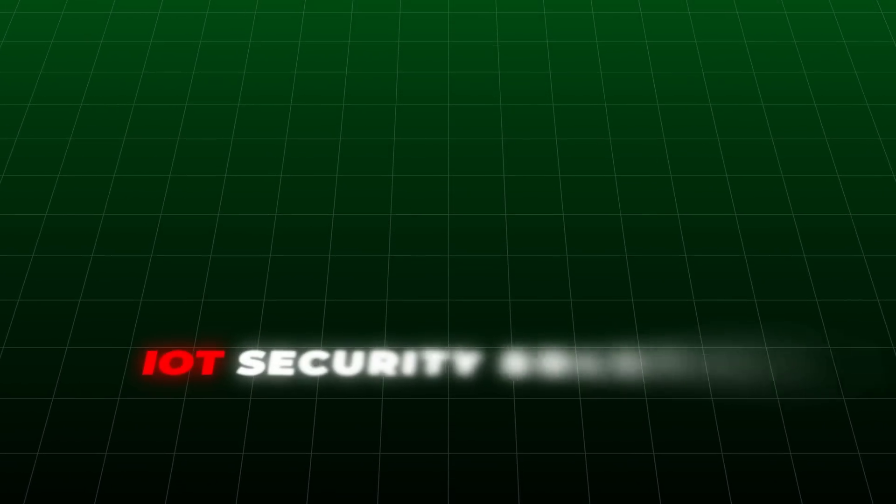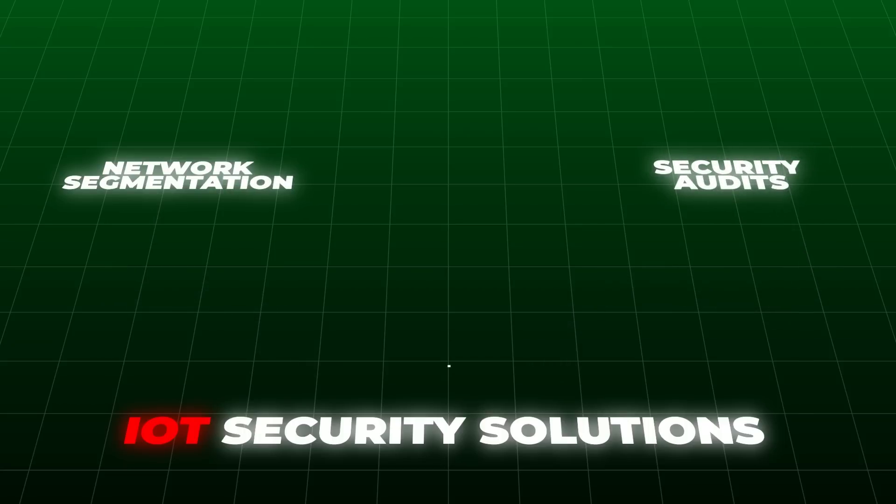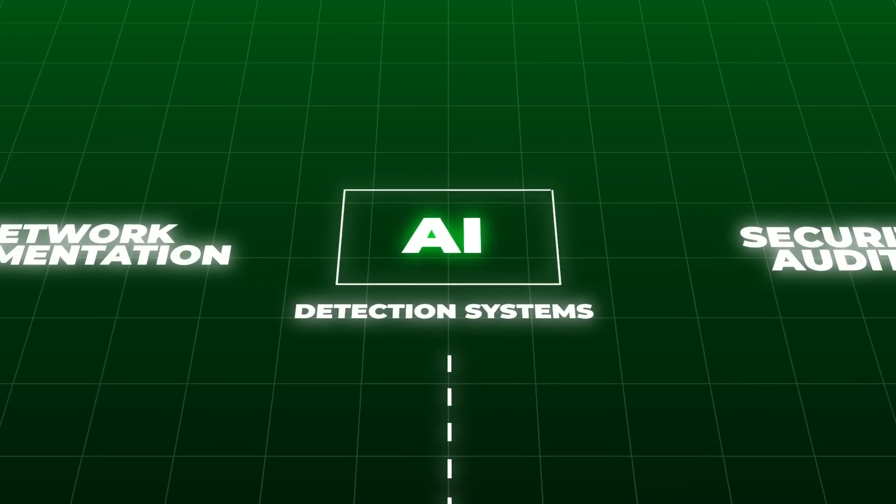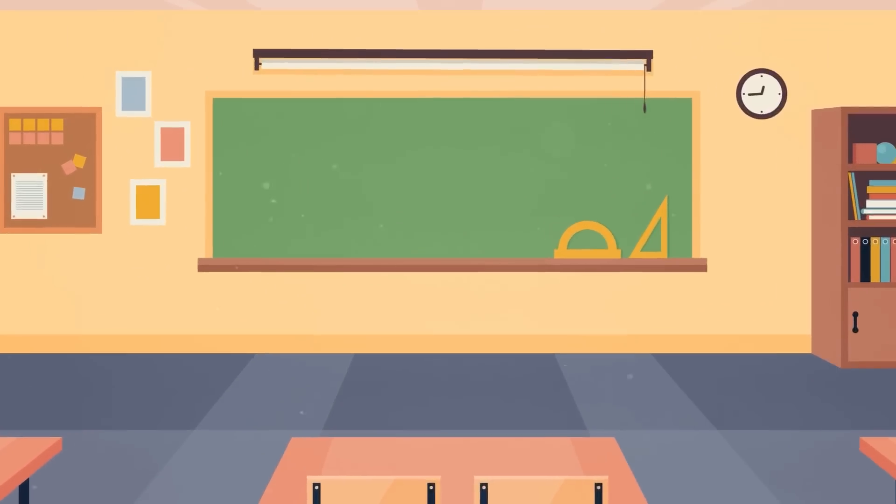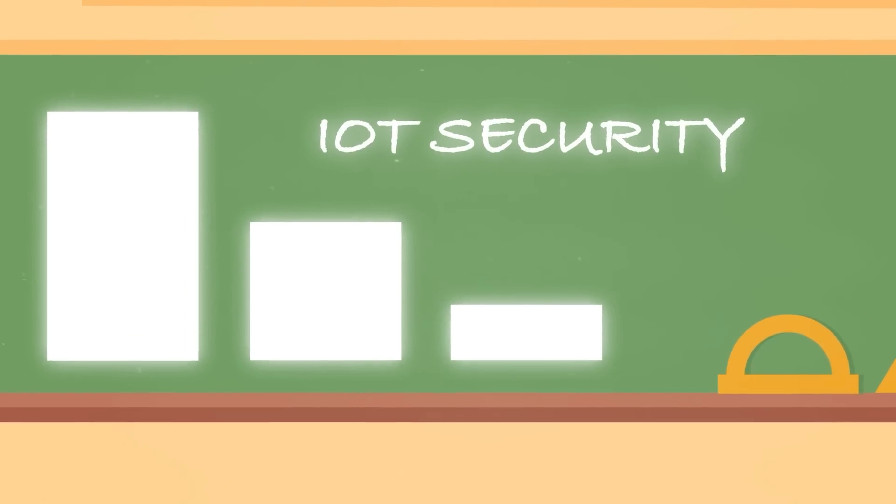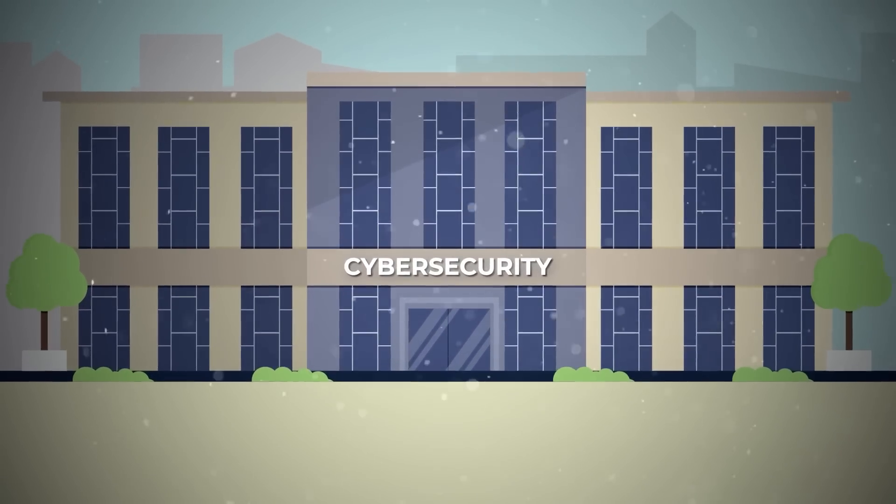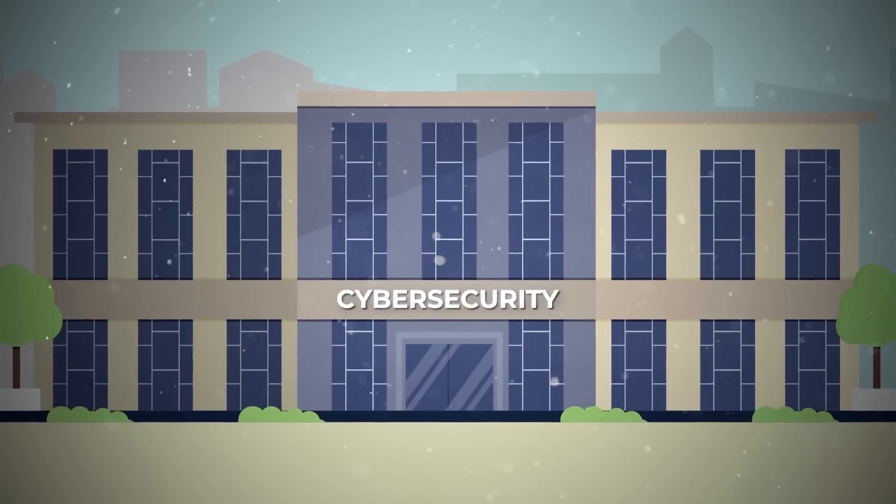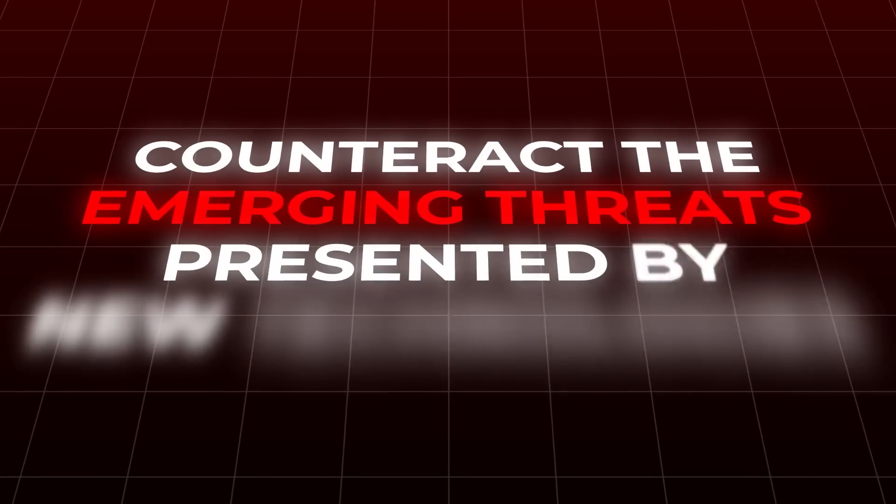In response, industries have begun to invest more heavily in comprehensive IoT security solutions. These include advanced network segmentation, regular security audits, and the implementation of AI-driven anomaly detection systems that can adapt to new threats dynamically. Educational curriculums in technology and business schools now emphasize IoT security, preparing the next generation of cybersecurity professionals to think critically about the architecture and inherent vulnerabilities of interconnected devices. This incident serves as a stark reminder that in the digital age, an effective cybersecurity strategy must evolve continually to counteract the emerging threats presented by new technologies.